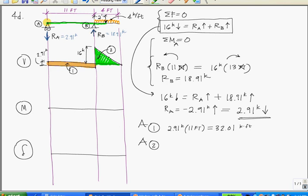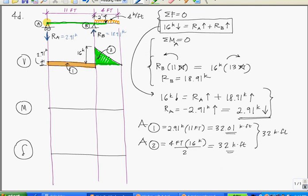Area 2 is a triangle. And the formula for the area of a triangle is base times height times 1 half. So our base is 4 feet, looking at the load diagram. Our height is 16 kips. And again, since it's a triangle, we have to divide by 2. 4 divided by 2 is 2 times 16 is 32. The units are kips times feet, 32 kip feet. Now, theoretically, these areas should be exactly the same. We have a small rounding error. This is because we rounded off the reactions. So for our purposes, let's just call it 32 kip feet for both of these areas.